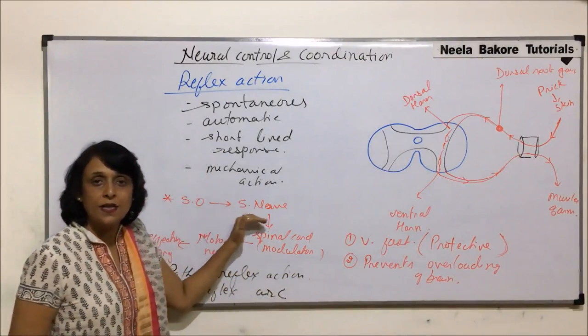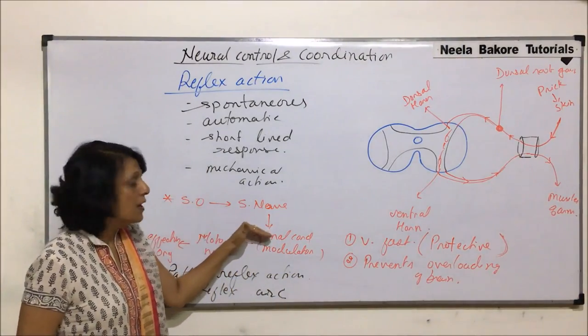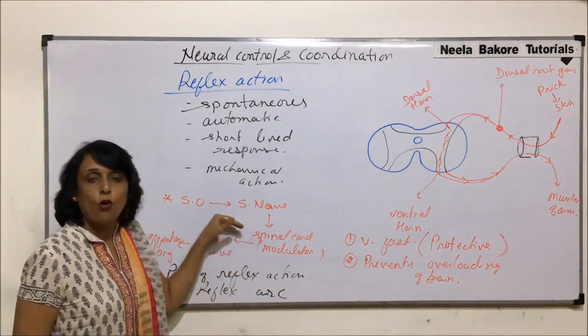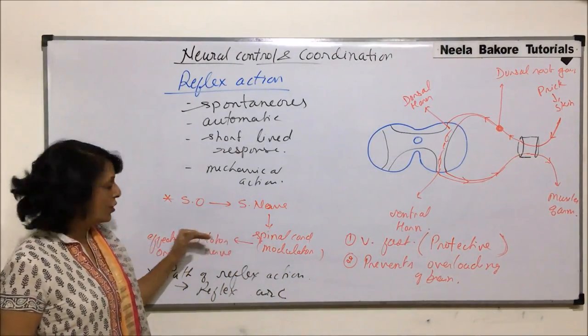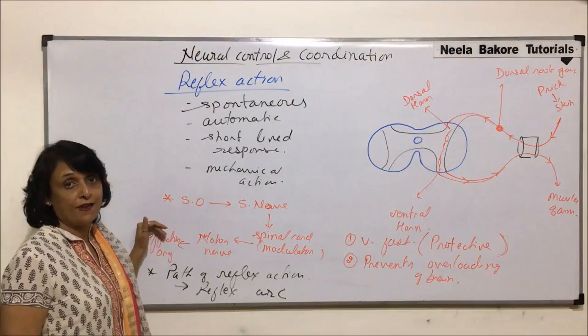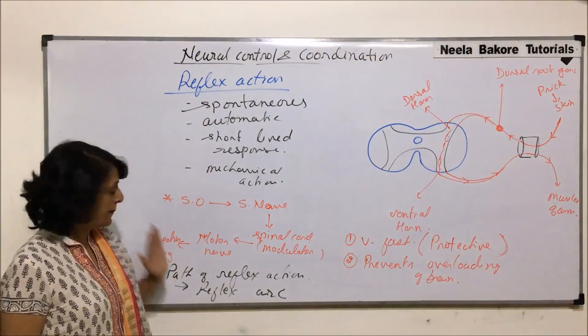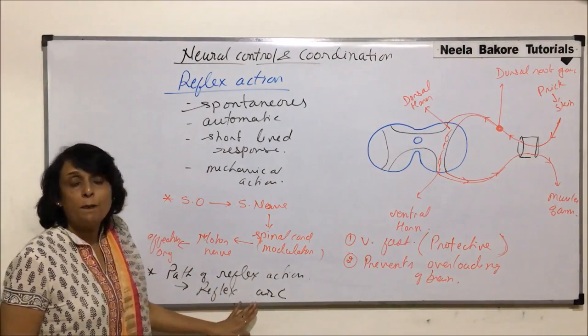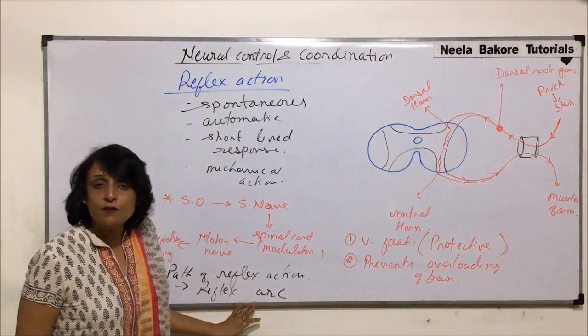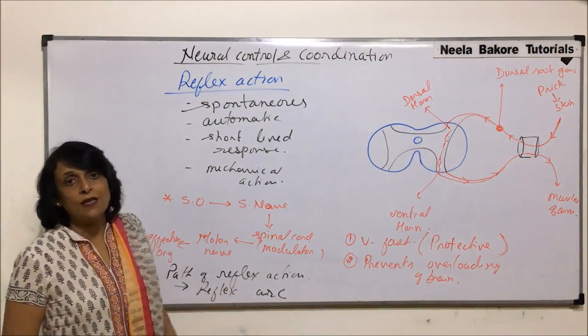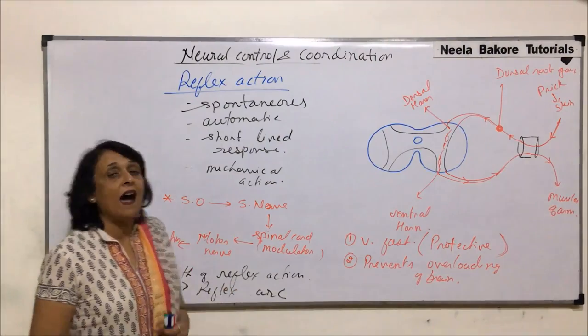So in reflex action, the following are involved: sensory organ, sensory nerve, spinal cord, motor nerve, and the effector organ. The path in which it is traveling is known as the reflex arc.